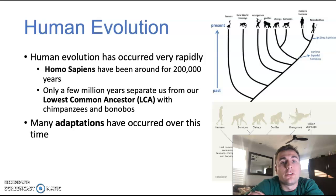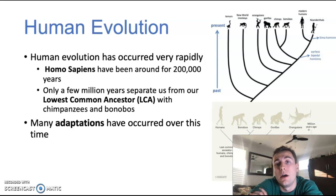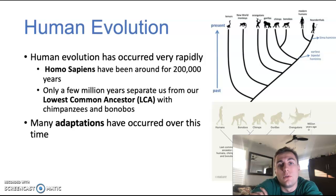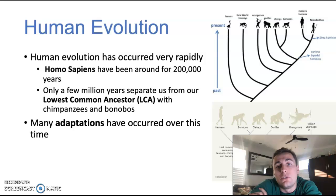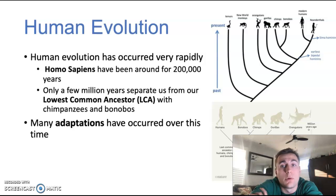The first thing I want to talk about is human evolution in general. Human evolution occurred very rapidly. We've only been around as modern homo sapiens for about 200,000 years. While that might seem like a long time, it's actually a very short time evolutionarily speaking. If you think of animals like the alligator, who've been around for 85 million years, you start to realize we've only been around for a very short amount of time. If you trace back our lineage a few million years, you'd eventually come across what's known as the lowest common ancestor between us and chimpanzees and bonobos, our closest living relatives. Before that split, we were all just one species.